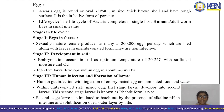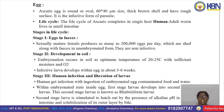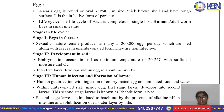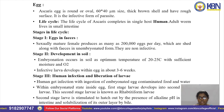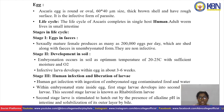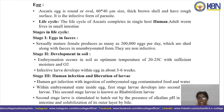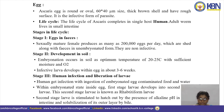Stage 2 — development in soil: embryonation occurs in soil at an optimum temperature of 20 to 25 degrees Celsius with sufficient moisture and oxygen. Infective larvae develop within eggs in about three to six weeks.